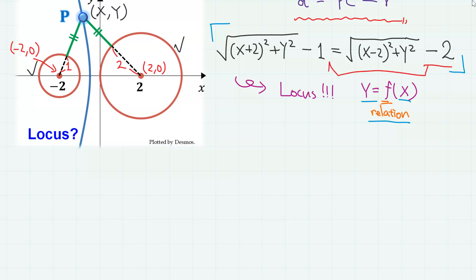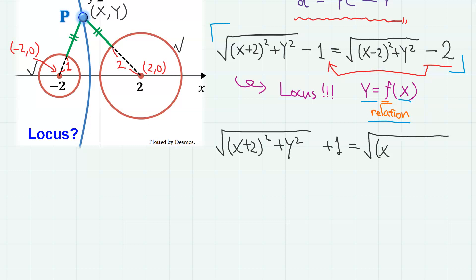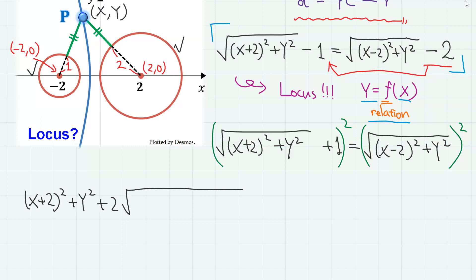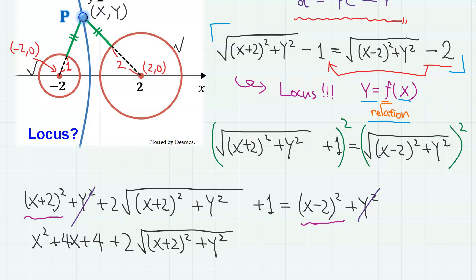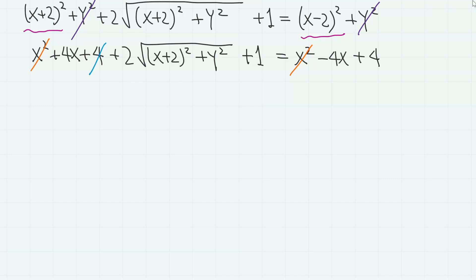Moving minus 2 to the left-hand side, we have: square root of x plus 2 squared plus y squared plus 1 equals square root of x minus 2 squared plus y squared. Now we remove the radicals by squaring both sides. Then we have x plus 2 squared plus y squared plus 2 times square root of x plus 2 squared plus y squared plus 1 equals x minus 2 squared plus y squared. The y squared terms cancel out, and expanding the squares gives x squared plus 4x plus 4 plus 2 times square root plus 1 equals x squared minus 4x plus 4.